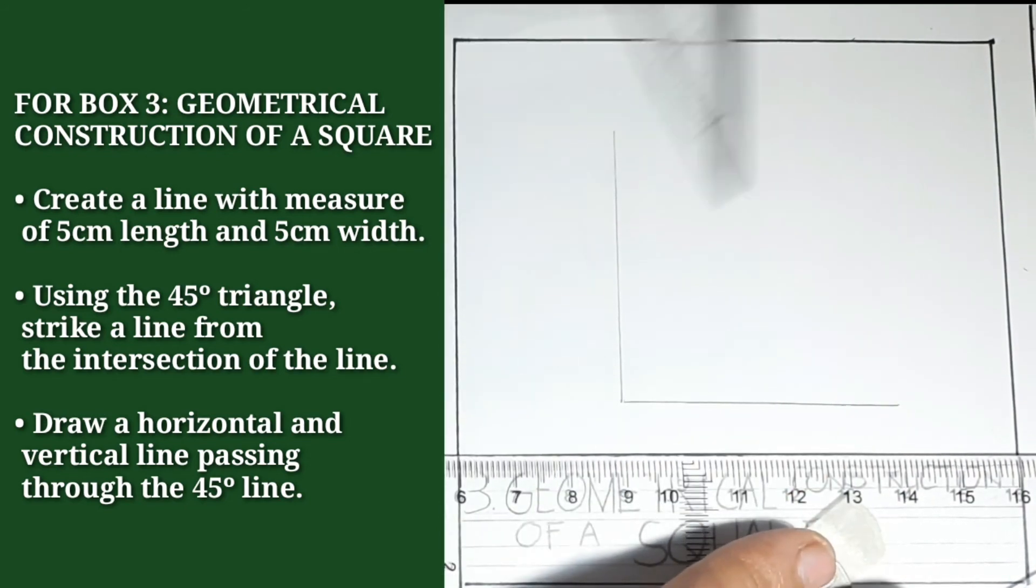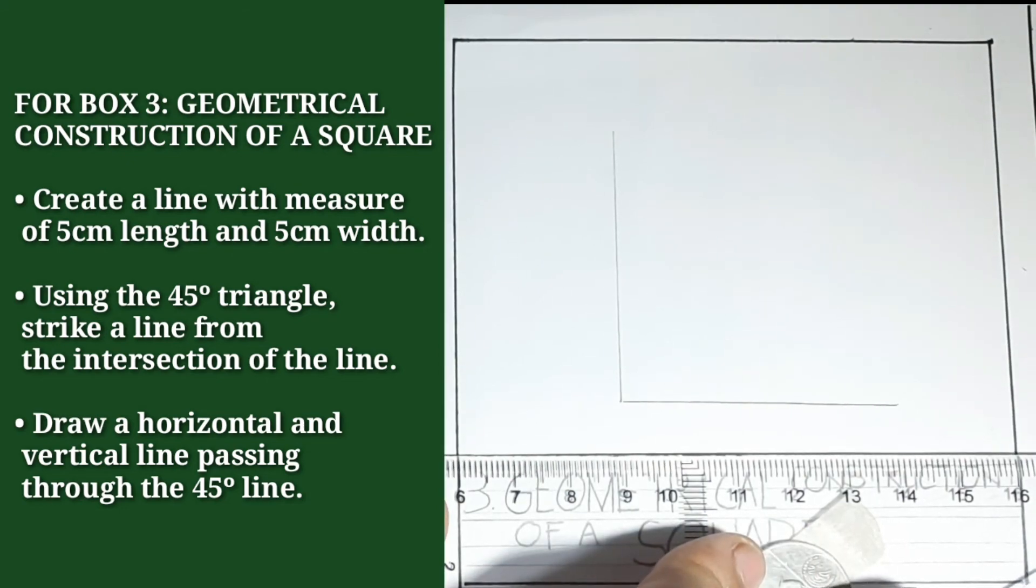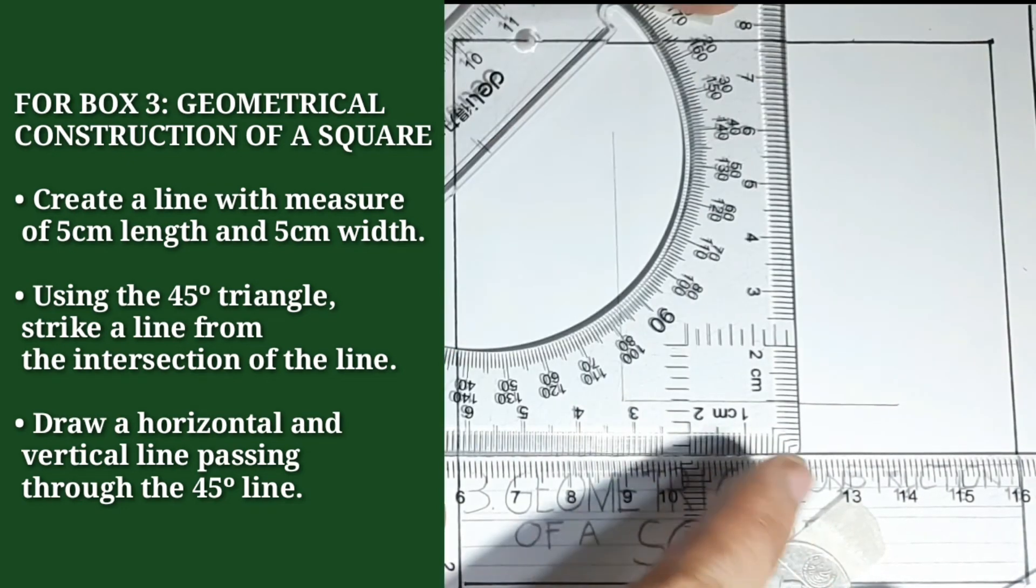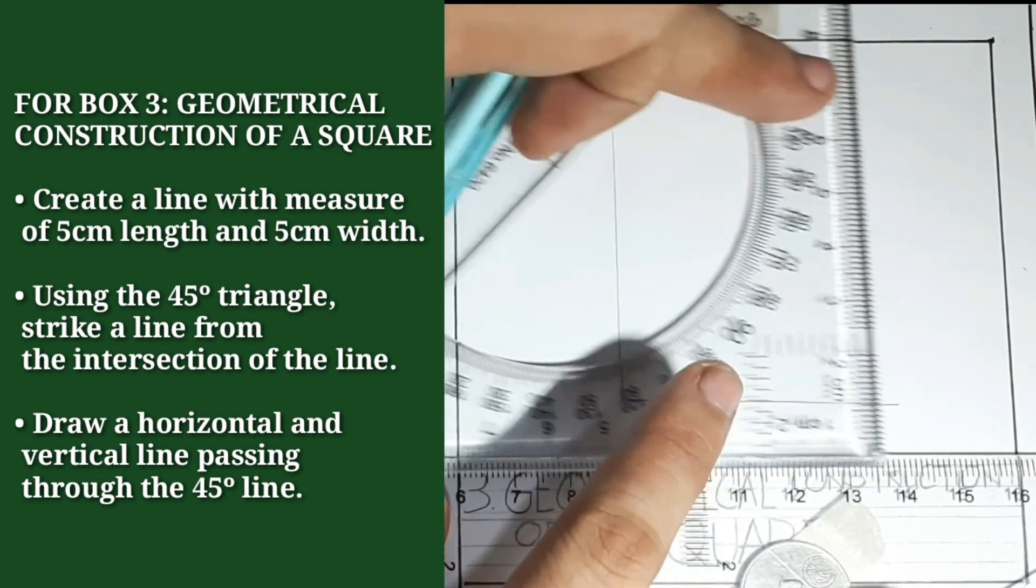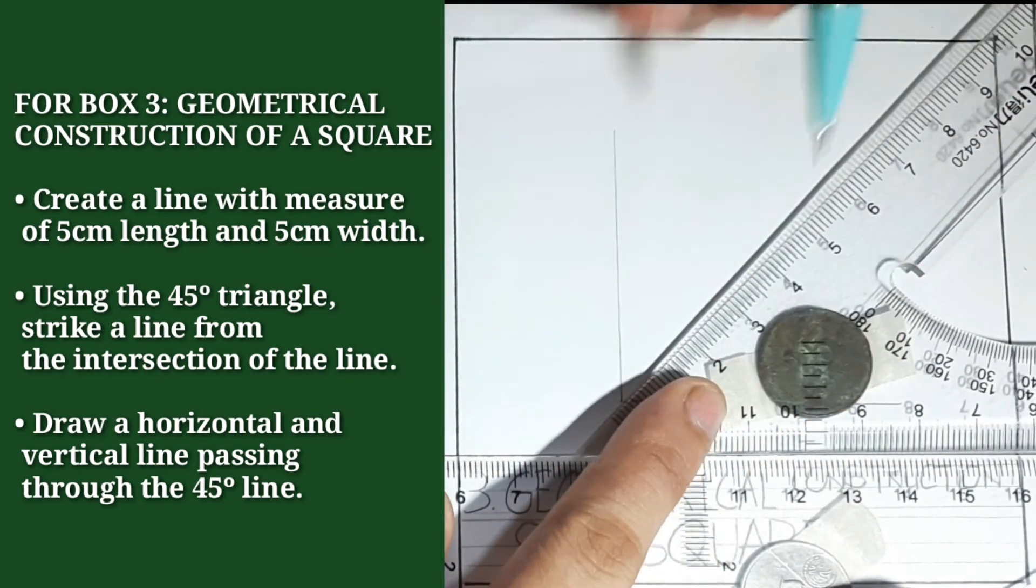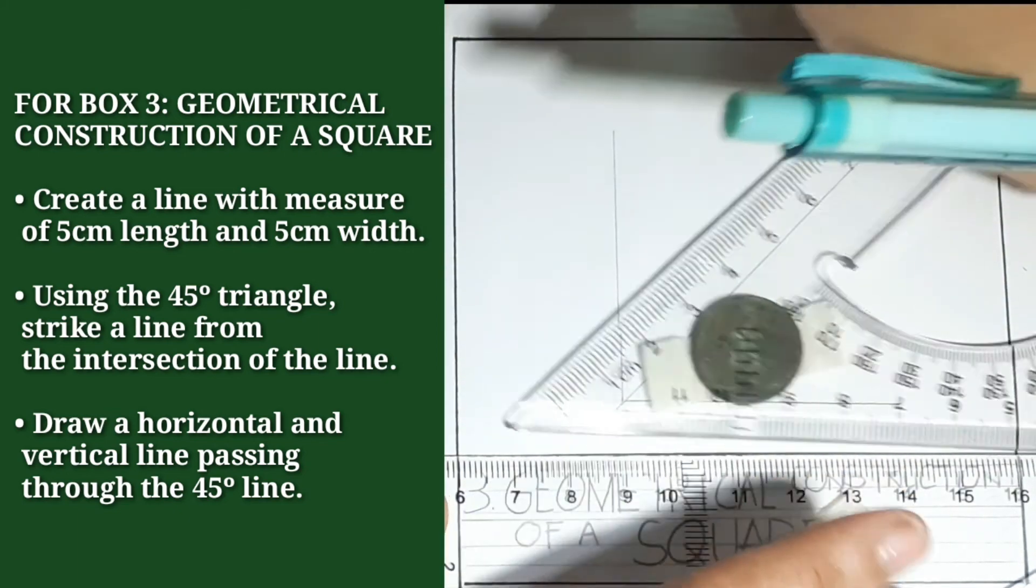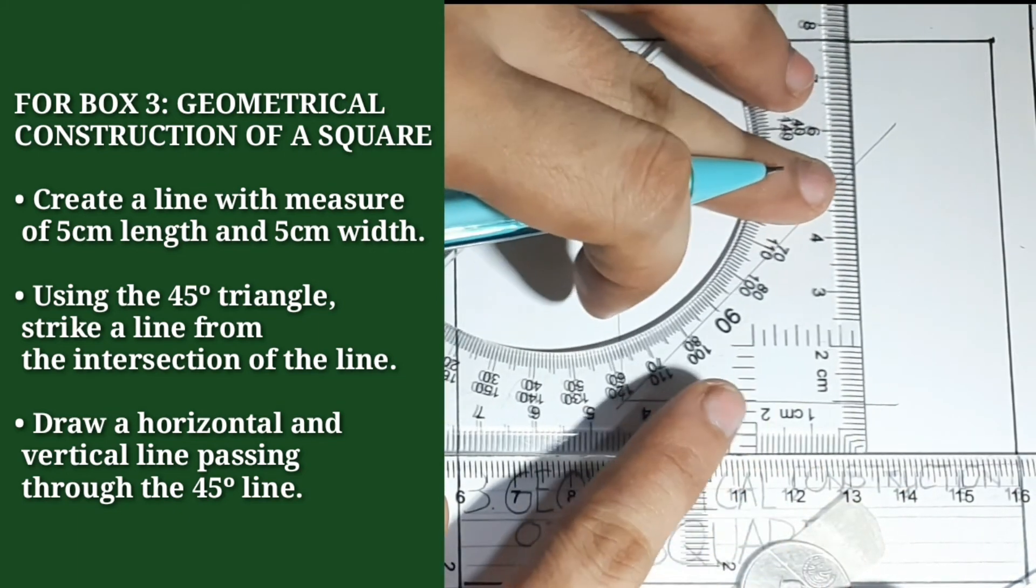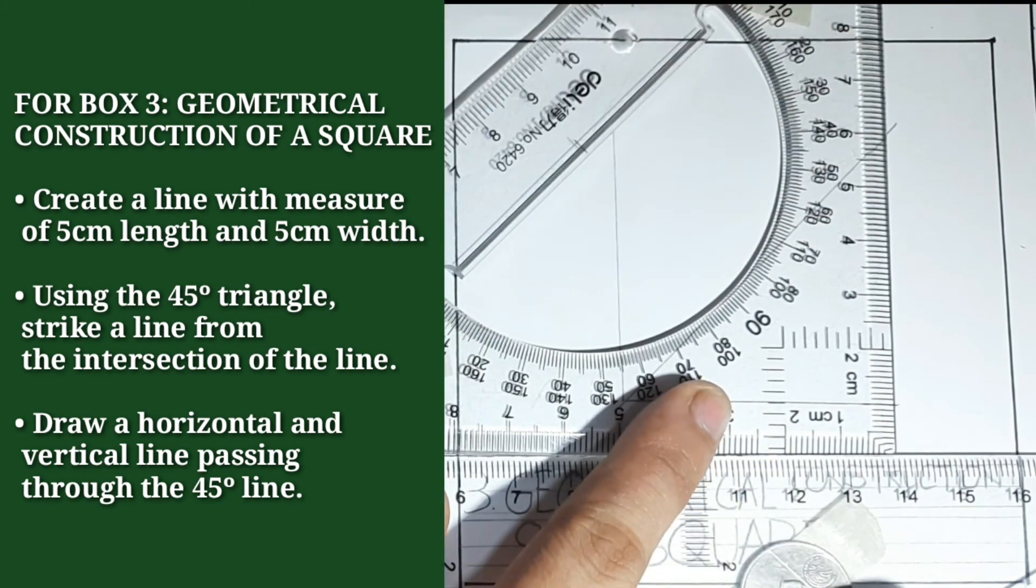Using that intersection and using our 45 by 45 degrees triangle, we will strike our 45 degrees. And then, create the horizontal line and then create the vertical line.